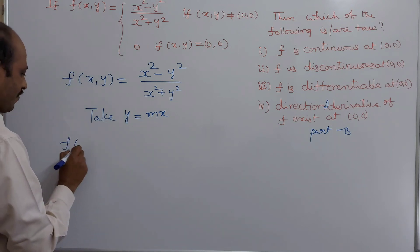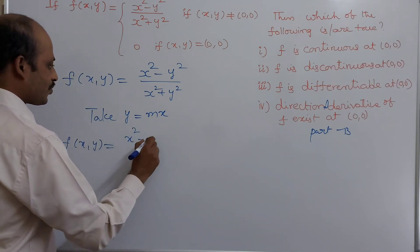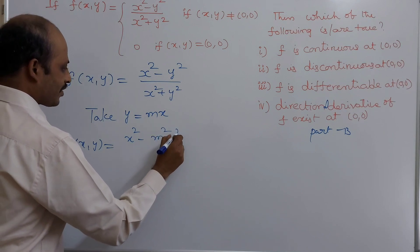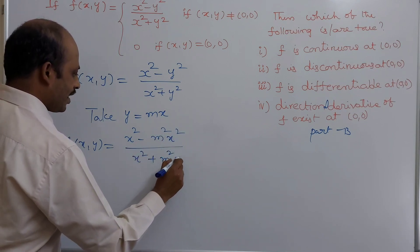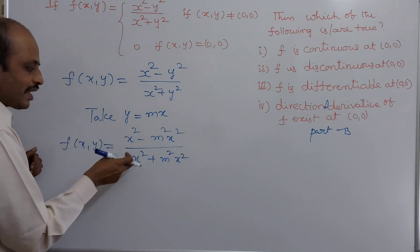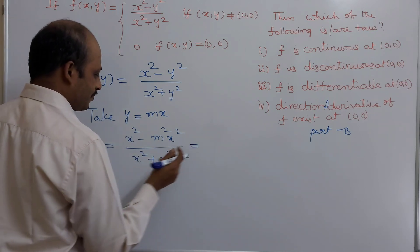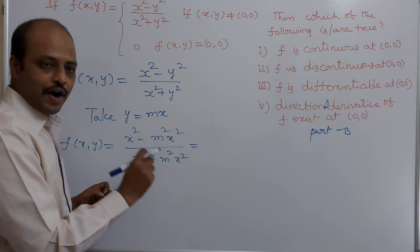Then what happens? f(x,y) is equals to x square minus m square x square divided by x square plus m square x square. By making x square common and cancel, by making x square common and cancel.